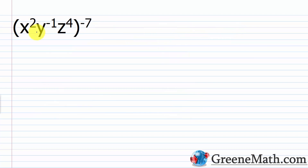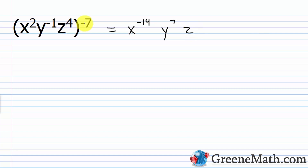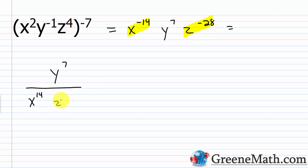Another example: inside parentheses, x squared times y to the power of negative one times z to the fourth, raised to the power of negative seven. Applying the power-to-power rule: x squared raised to negative seven gives x to the negative 14; y to the negative one raised to negative seven — negative one times negative seven is positive seven, so y to the seventh; z to the fourth raised to negative seven — four times negative seven is negative 28, so z to the negative 28. Moving terms with negative exponents: y to the seventh stays in the numerator, x to the negative 14 moves to the denominator as x to the 14th, and z to the negative 28 becomes z to the 28th in the denominator. The answer is y to the seventh over x to the 14th times z to the 28th.